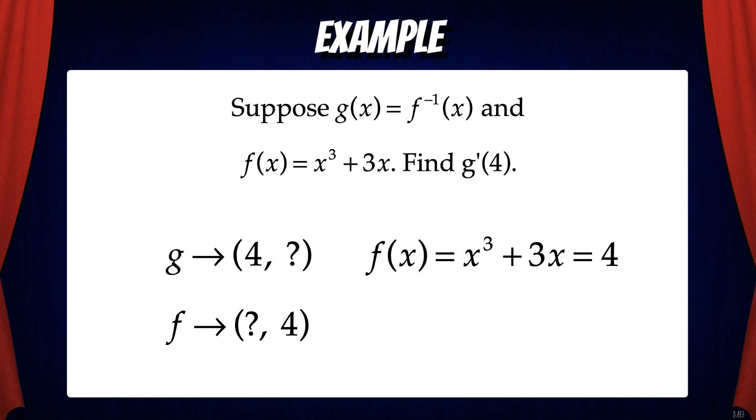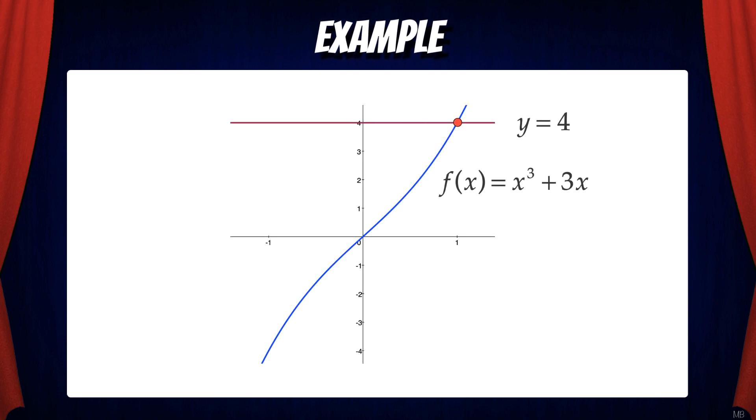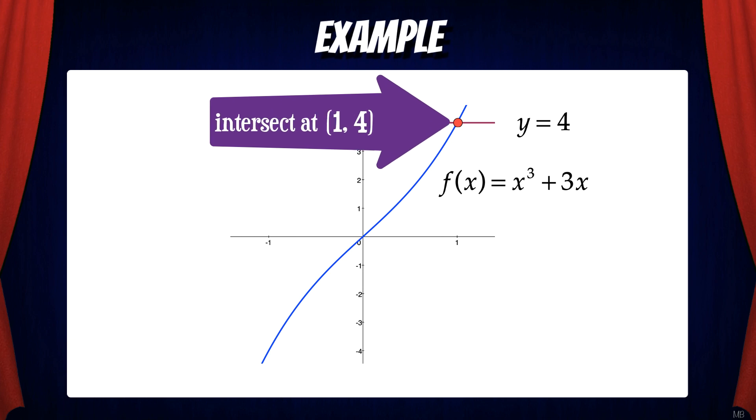In this particular example, you might be able to see that x equals 1. But you can always solve an equation like this algebraically if possible or graphically with a calculator. For example, here we have a graph of f of x and y equals 4, which would help us determine that they intersect at the point 1, 4.